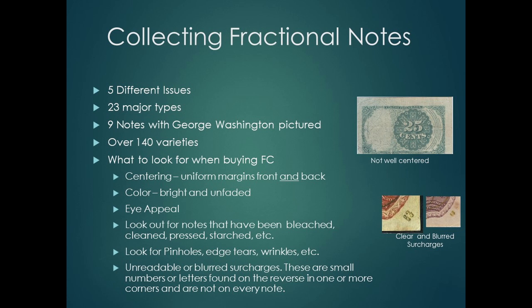Interested in collecting fractional currency notes? Here are various ways to do that, and tips of what to look for. You could collect from one or all five of the issues. There are 23 major types through the five issues, but that quickly expands to over 140 notes if you want every variety. There are nine notes with George Washington's likeness. Like most collectibles, there are a few notes that are hard to find in any condition, but most notes can be had for reasonable amounts in nice condition. To pick the better ones, look for the six items listed in the last bullet. That's our quick overview of fractional currency. Until next time, happy collecting.